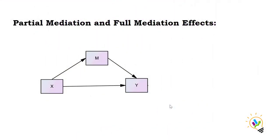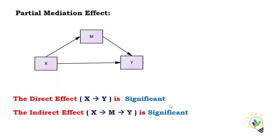Hello, welcome to Easy Statistics. In this video I am going to discuss partial mediation effect and full mediation effect. In partial mediation effect, the direct effect is significant — that is, the impact of X on Y is significant — and also the indirect effect is significant, meaning X impacting Y through M is also significant.